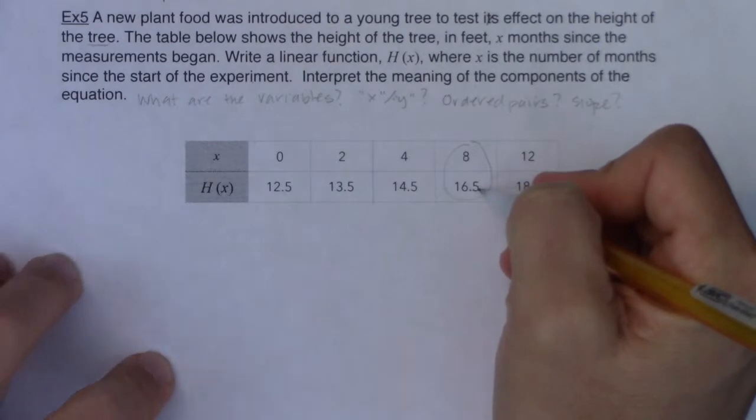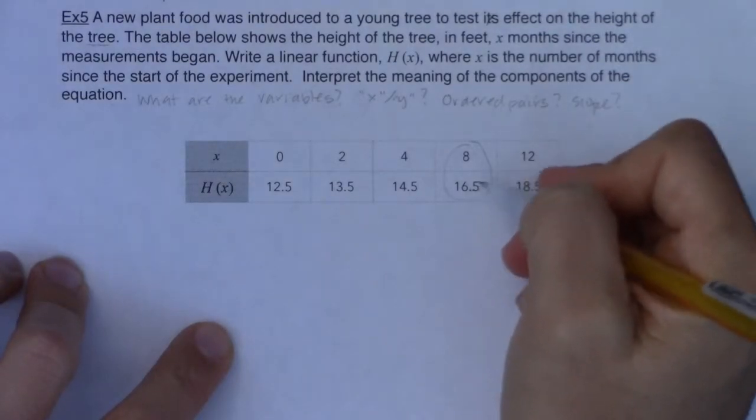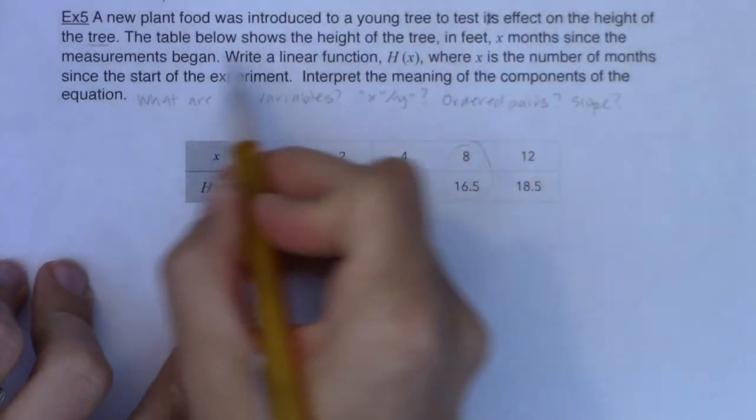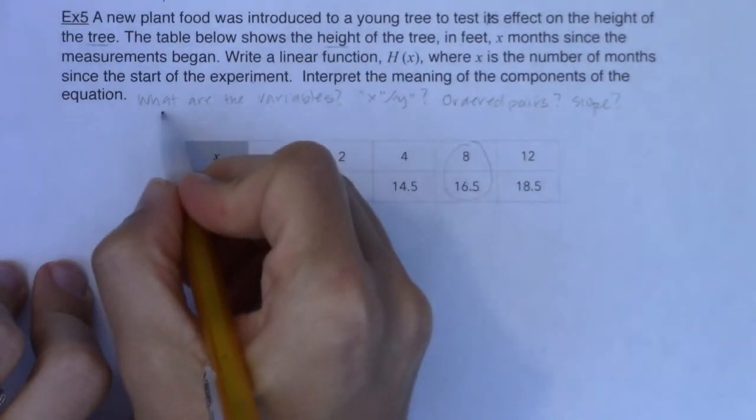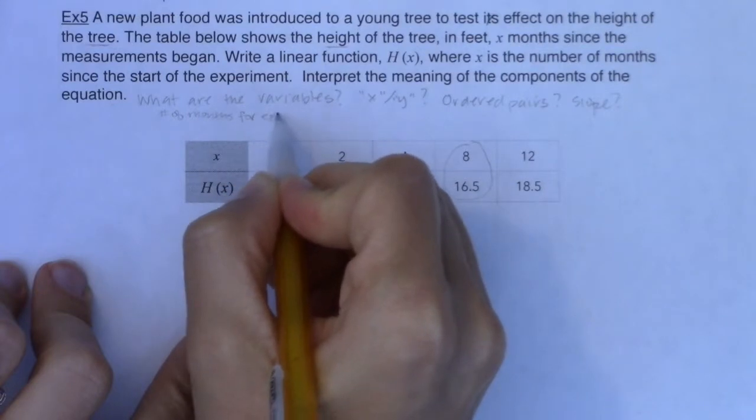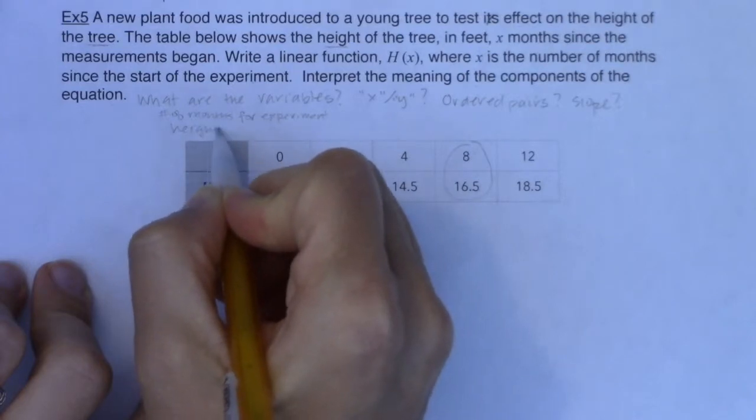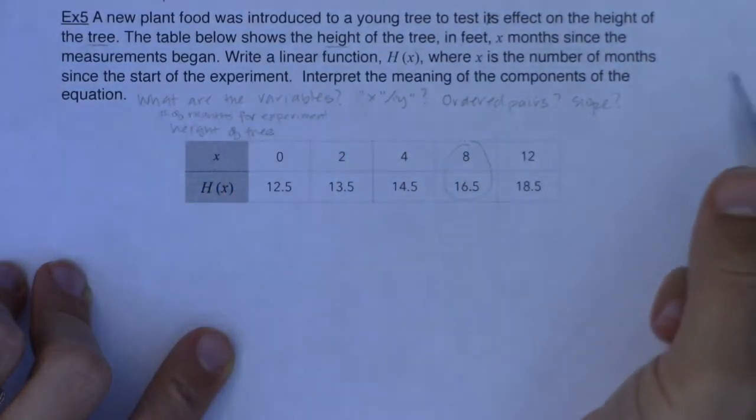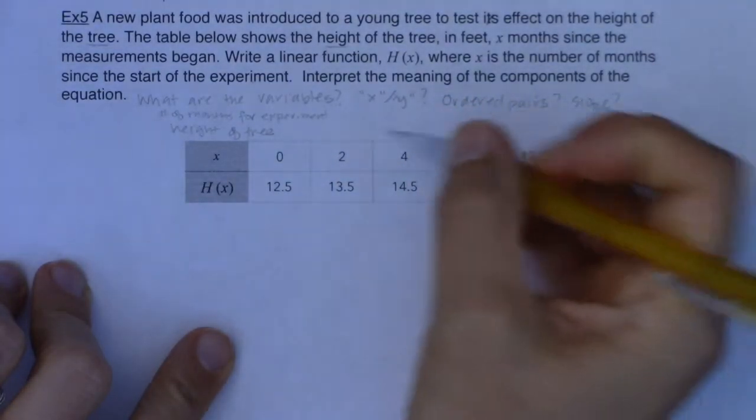Well, what does 16.5 represent? Is it 16.5 pencils, 16.5 Facebook friends, 16.5 iPhones? What are the units on this? If we look through it, right? If we read this, it says the table below shows the height of the tree. All right, so my two variables are the number of months that I have been running this experiment. And as those number of months progress, I'm keeping track of the height of the tree. So those are the two quantities that are varying. So these are all months up here, and these are all heights of the tree down here.